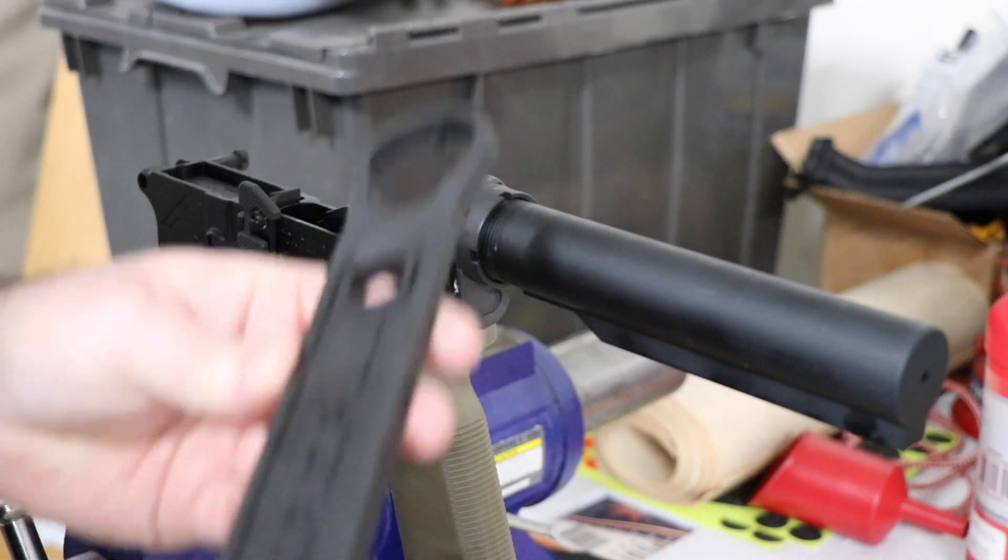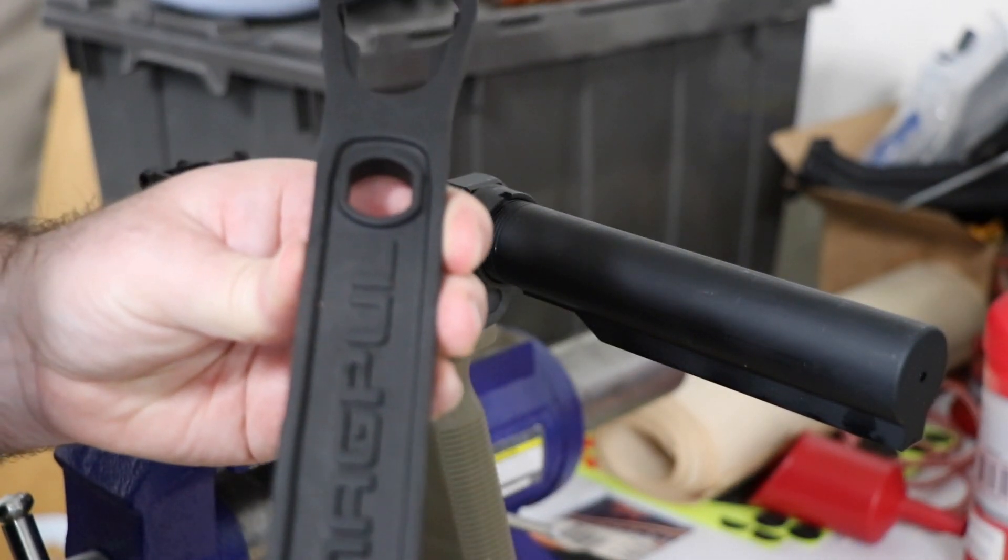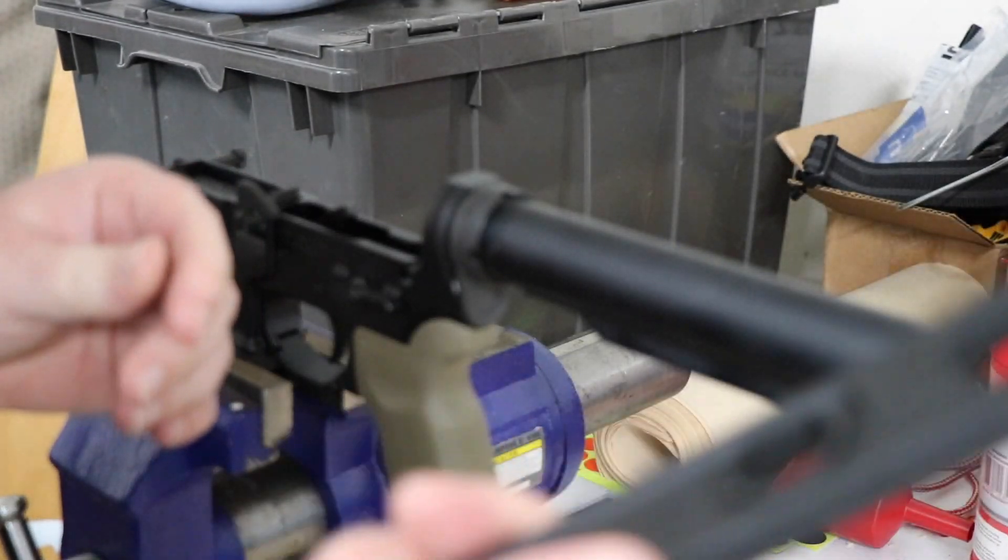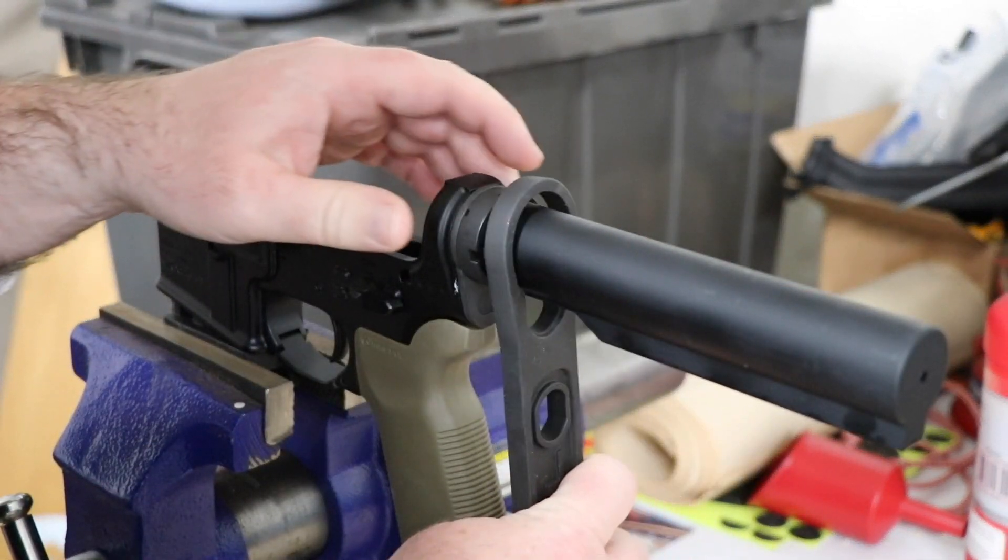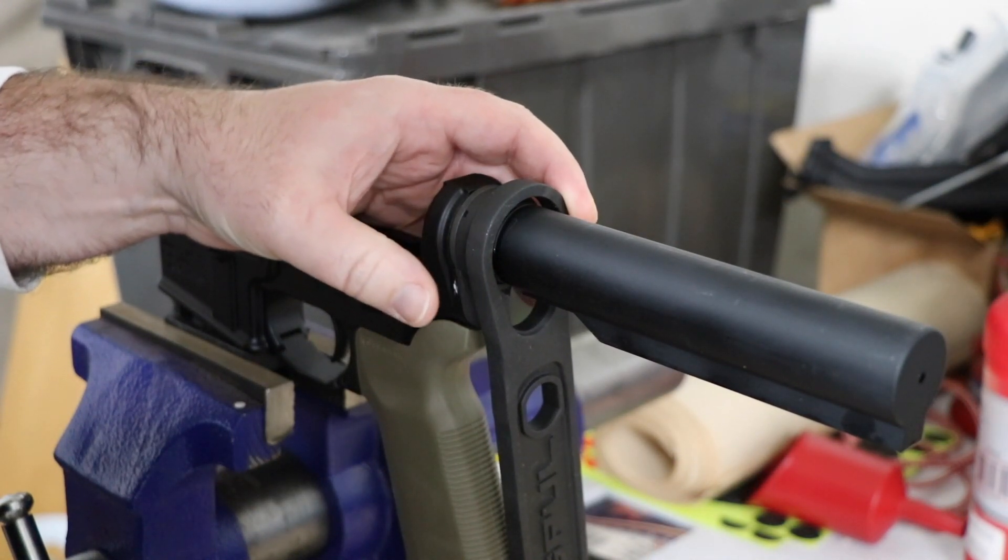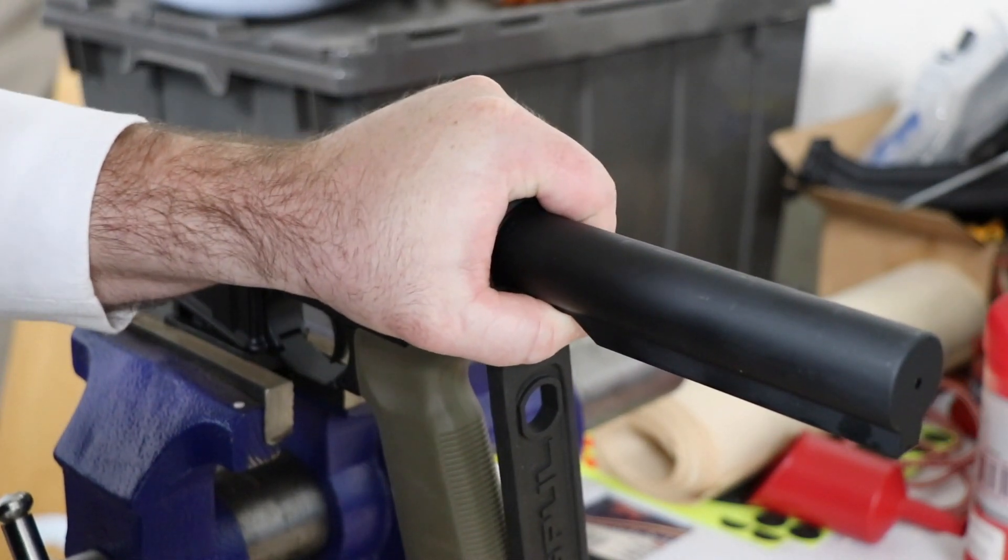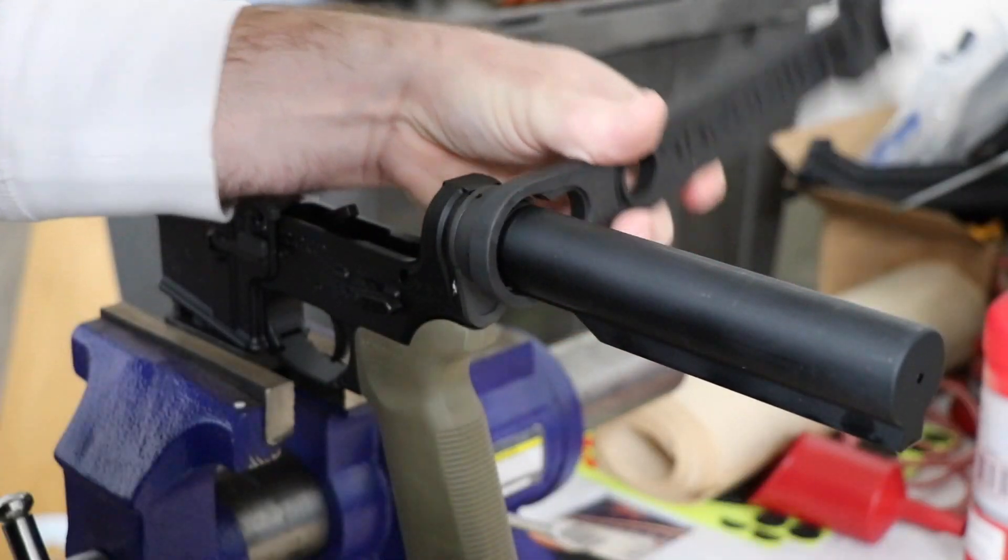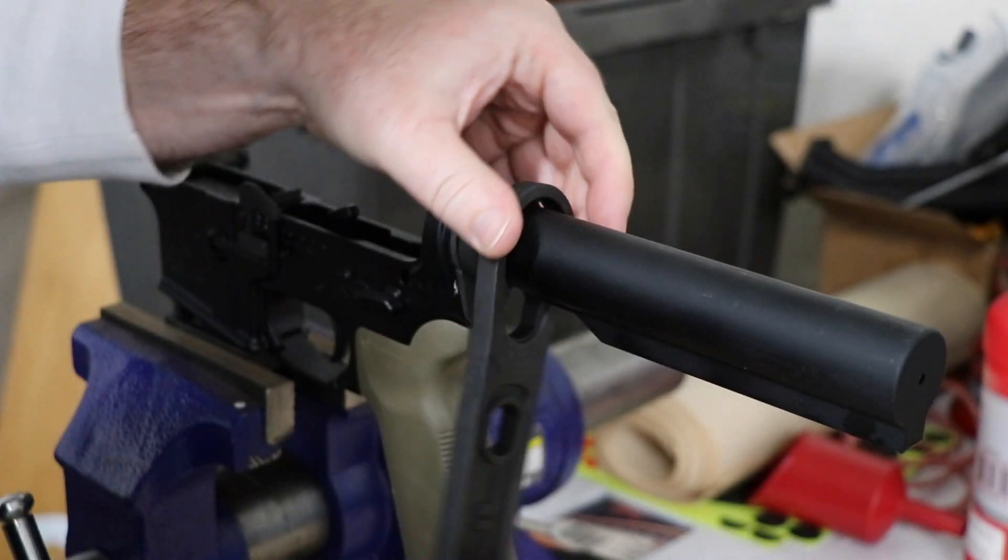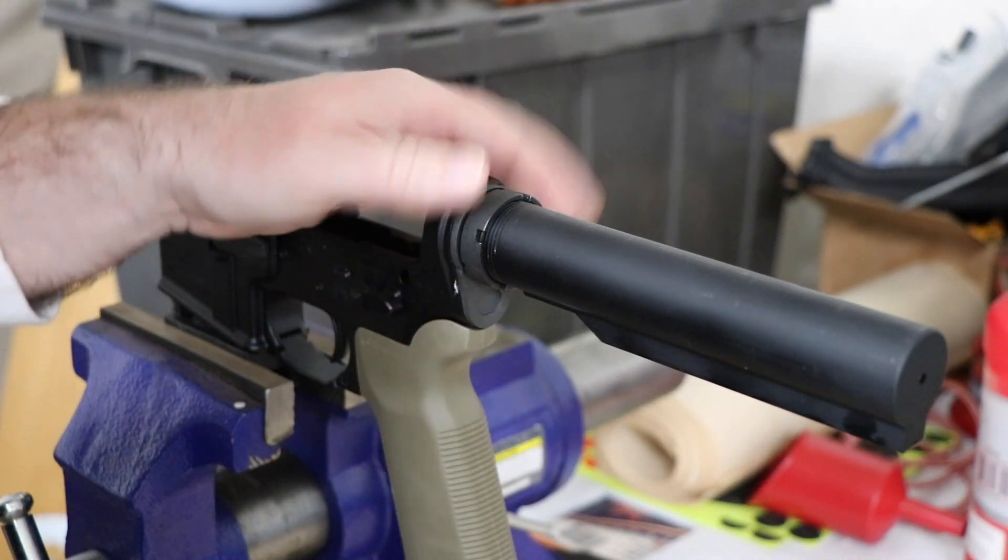All right. So next thing here, we grab the handy dandy Magpul armorer's wrench, which I really like this one a lot. We're going to slide this guy on here and hopefully my weak arms can actually break this guy loose. For those who don't know, I've been doing the Mission 22 push-up challenge for April, so 2,200 push-ups for the month of April.